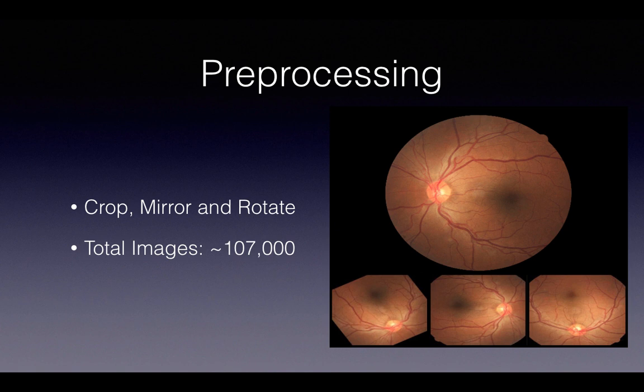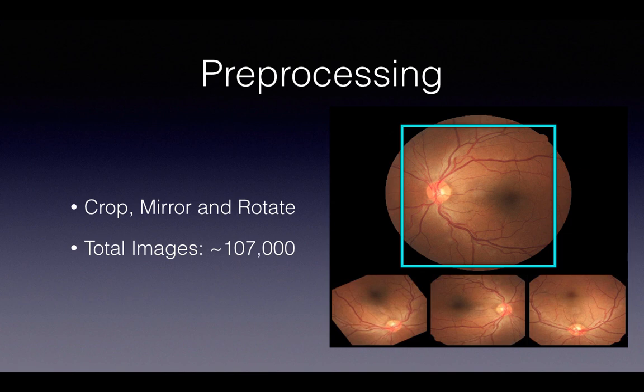What I elected to do was crop the image. You'll notice that around the image of the eye there's a lot of black space, which we define as noise — and all you want is the signal. By cropping the image, you do remove parts of the eye, but you get so much more of the signal and almost none of the noise. After doing that, I was able to mirror and rotate the images to augment the dataset. You can't always do this with some images, but for images of your eye you can get away with it. I was able to take the entire dataset from 35,000 images to 107,000.